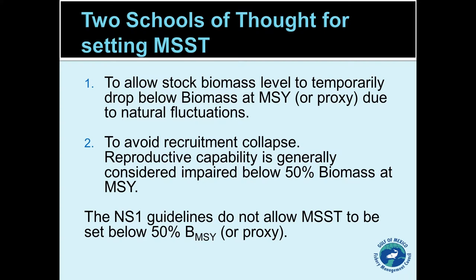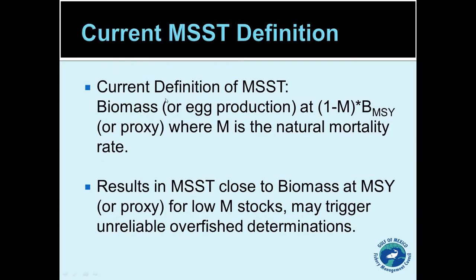The other school of thought is to allow the council as much flexibility as possible to try to address the stock without the constraints of a rebuilding plan — set the threshold well below the MSY level. We're allowed to go as far as 50% below. If we go any lower, most stocks reach a situation where the number of fish being removed actually exceeds the ability of the stock to create new fish — that's called a recruitment collapse. This generally occurs at around 50% of the MSY biomass level, which is why the national standard one guidelines don't allow MSST to be set below 50% of BMSY.